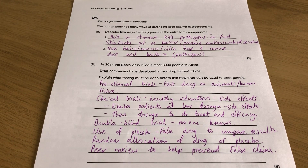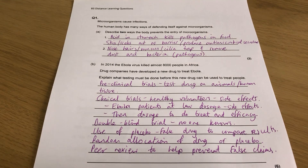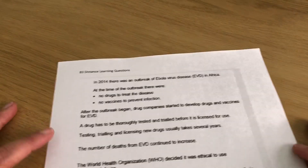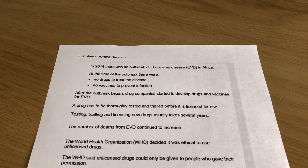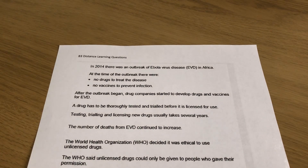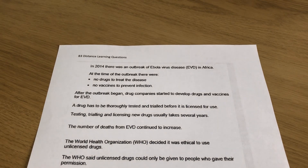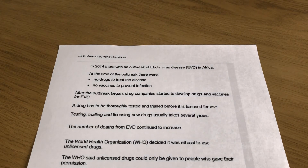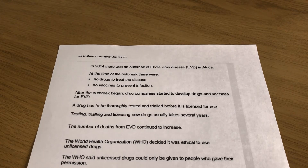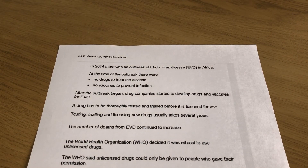Now our second question — again quite topical. In 2014 there was an outbreak of Ebola Virus Disease (EVD) in Africa. At the time there were no drugs to treat the disease and no vaccines to prevent infection. After the outbreak began, drug companies started developing drugs and vaccines for EVD. A drug has to be thoroughly tested and trialled before it is licensed for use. Testing, trialling, and licensing new drugs usually takes several years, but deaths from EVD continued to increase.